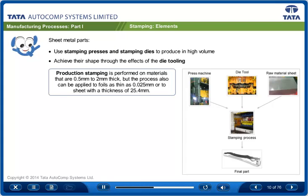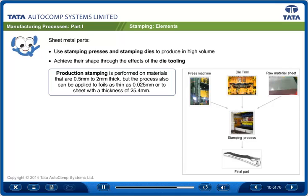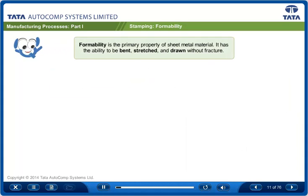The stamping process can also be applied to foils as thin as 0.025 mm or to sheet metal with a thickness of up to 25.4 mm. Formability is the primary property of sheet metal material.